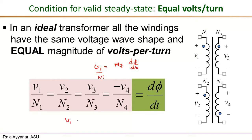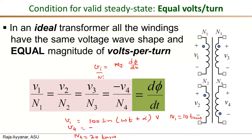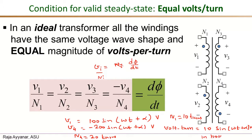For example, if V1 is 100 sine(ωt + α) volts and n1 is 10 turns, and if n4 is 20 turns, then V4 would be negative 200 sine(ωt + α) volts because of the dot polarity. Looking at the volts per turn in both cases, that is 100 divided by 10, giving 10 sine(ωt + α) — the same in both windings. That is the concept.